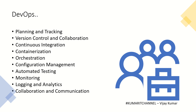By using all these tools and practices, organizations can achieve a faster and more reliable software delivery process. The specific pattern followed in the DevOps model goes: planning and tracking, version control and collaboration, continuous integration, containerization, orchestration, configuration management, automated testing, monitoring and logging analytics, and finally collaboration and communication.